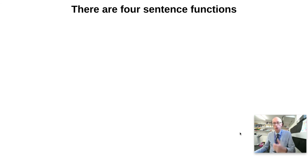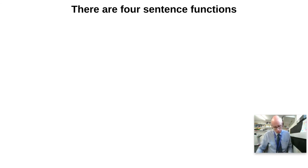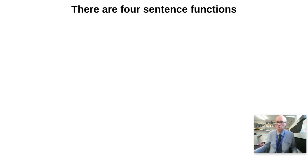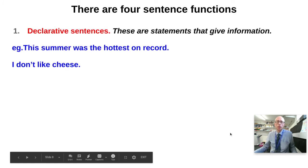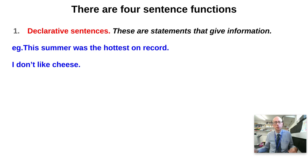Let's think about sentence functions — what can you do with a sentence? Write down on a piece of paper the four different things that you can do with an English sentence. Answer number one: declarative sentences. These are statements, things like 'This summer was the hottest on record' or 'I don't like cheese'. They give information; they're not necessarily factual — they could be opinion statements. So just because a text is full of declaratives doesn't necessarily mean it's factual or objective.